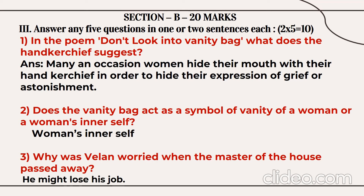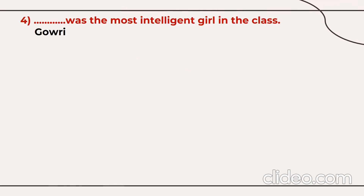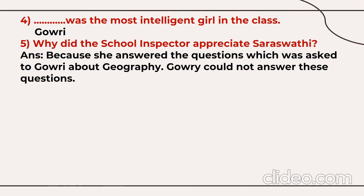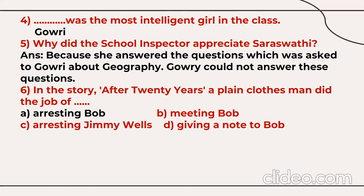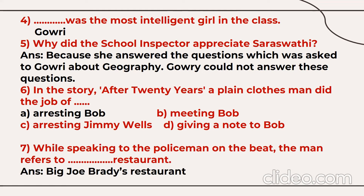Why was Valen worried when the master of the house passed away? He was worried because he thought he might lose his job. Who was the most intelligent girl in the class? Gauri was the most intelligent girl. Why did the school inspector appreciate Saraswati? Because she answered questions about geography that had been asked to Gauri, but Gauri could not answer them. In 'After Twenty Years,' what job was the plainclothes man doing? He was arresting Bob. Which restaurant does the man refer to while speaking to the policeman? Big Joe Brady's restaurant.